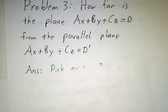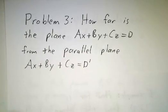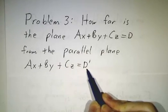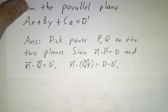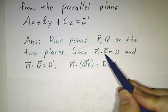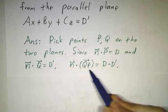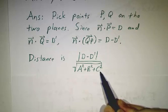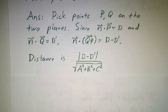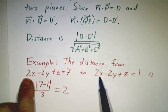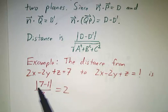Now we're going to look at the distance between two planes. They must be parallel planes, or else they intersect and their distance is 0. If they're parallel, one is ax + by + cz = d and the other is ax + by + cz = d'. We pick points p and q on the two planes. n dot p is d and n dot q is d'. So n dot QP is just d minus d', giving us the formula: distance equals |d minus d'| divided by the length of n, which is |d - d'| / √(a² + b² + c²). For example, for two planes with the same normal (2, -2, 1) but d = 7 and d = 1, the distance is |7 - 1| / 3 = 6/3 = 2.